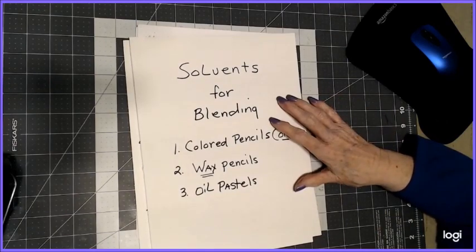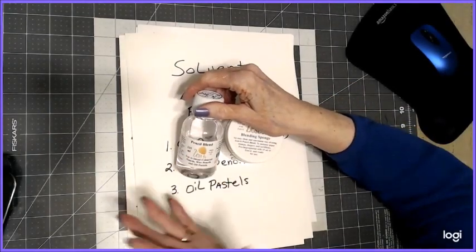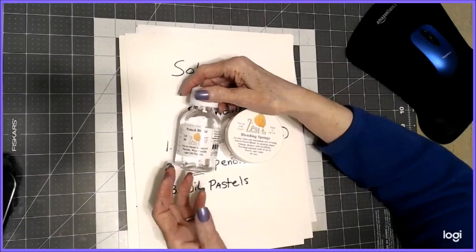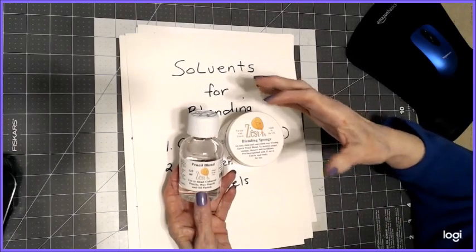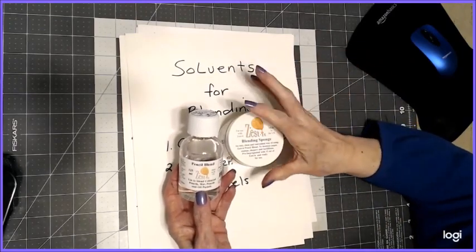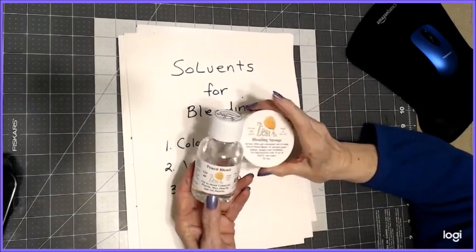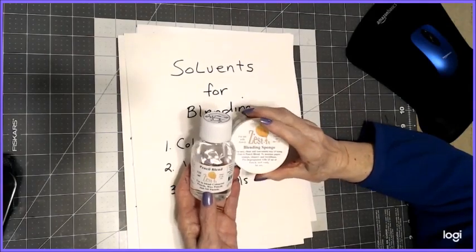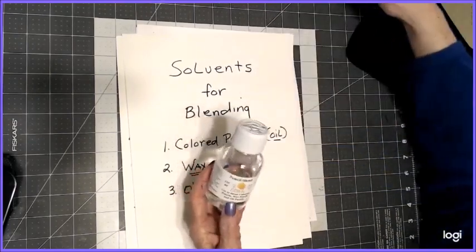They do dilute it with another non-toxic solvent, and they claim this is also non-toxic. This is good for blending your wax pencils, oil pencils, oil pastels, crayons, graphite, and you can use a brush or tortillion or a stump. If you live in the US, please go to jacksonart.com and order it.